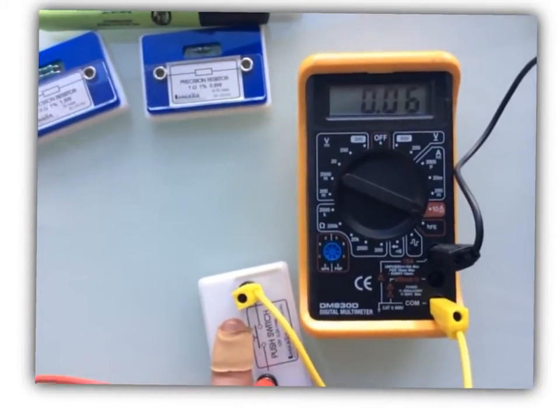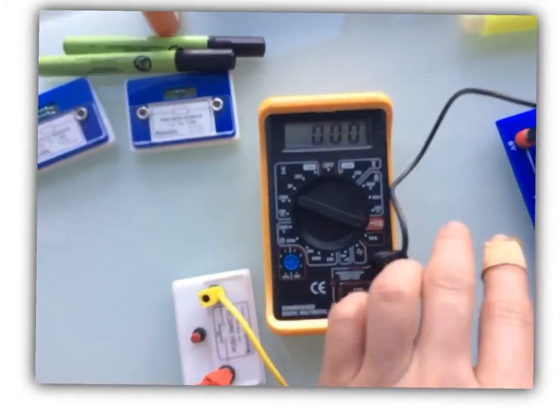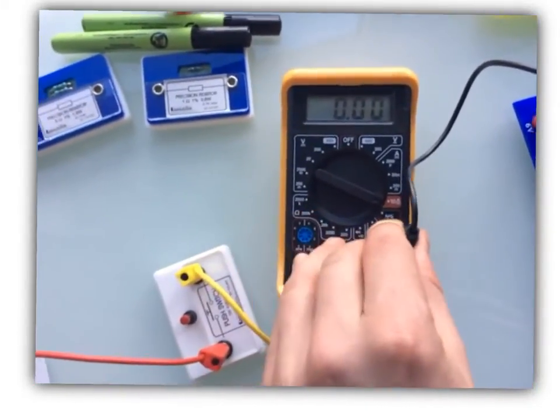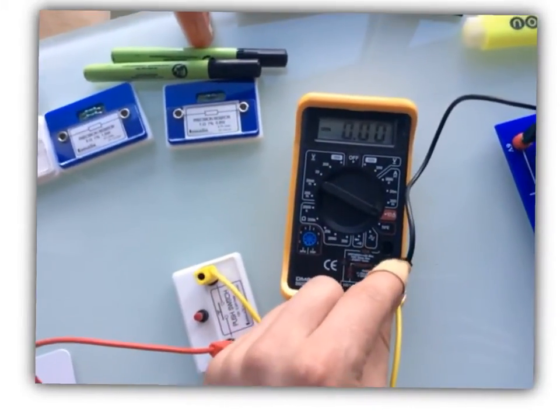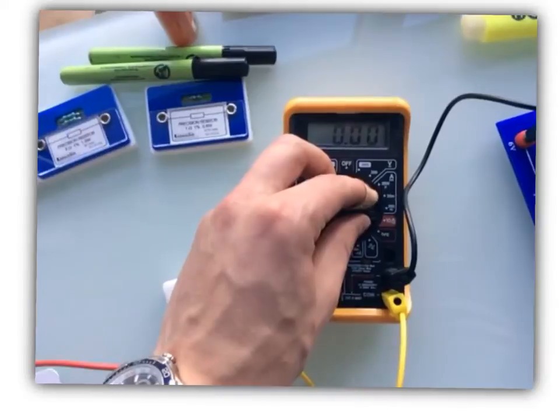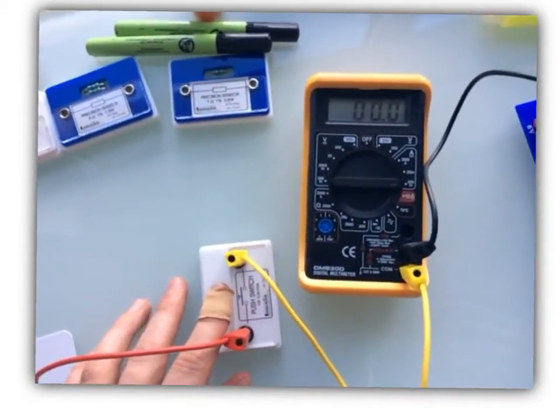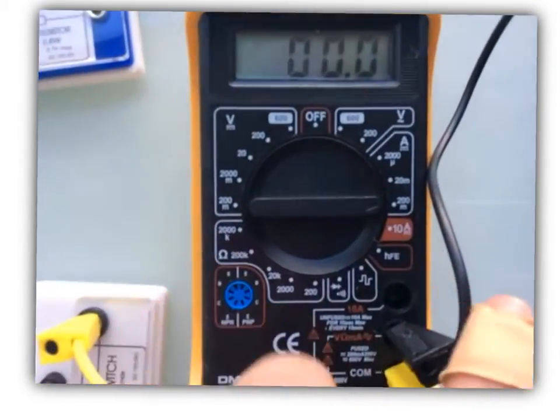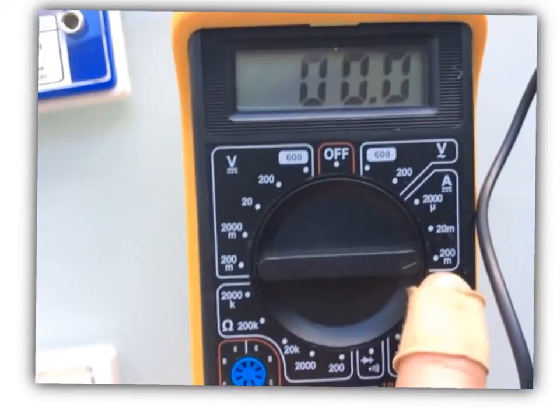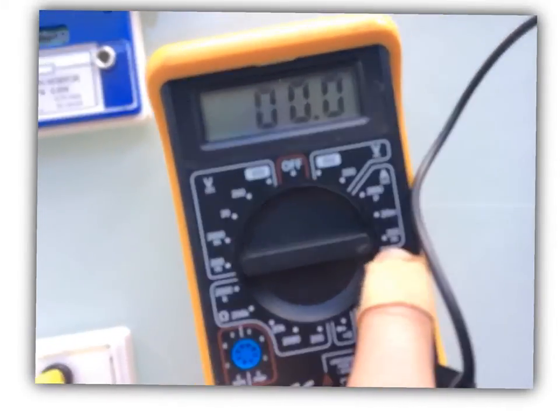What we need to do is change our ammeter into the milliamp setting. First, you need to connect it to this one here, so it's now in the bottom two just like with a voltmeter. Then click it round one. We're now on the milliamp setting, so you can see it's reading 58.0 milliamps.